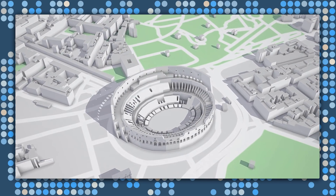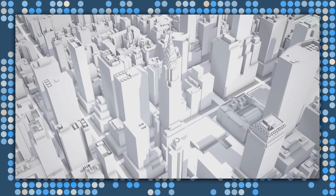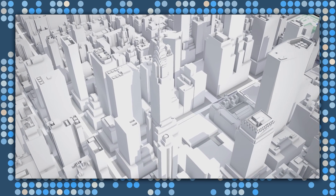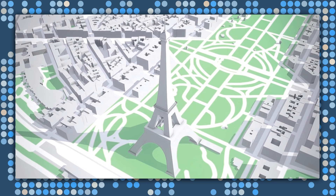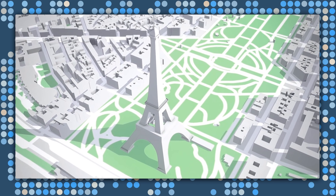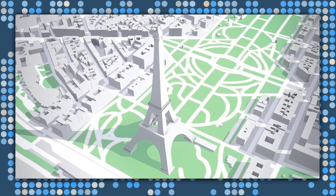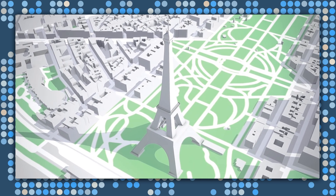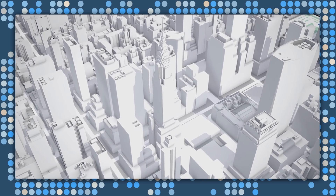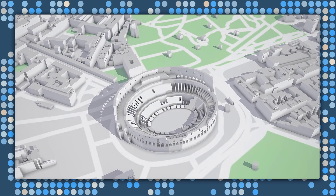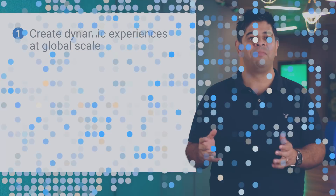Google Maps APIs provides hundreds of millions of 3D buildings, points of interest, roads, landmarks, cafes, parks, and more to help you form your game world. This is the same model of the world as Google Maps.